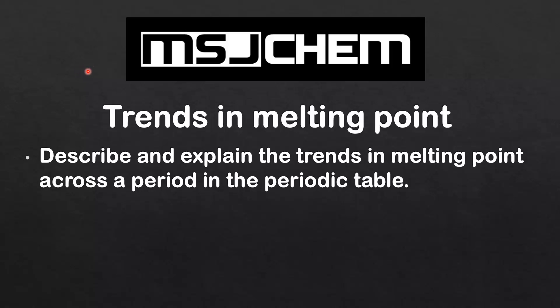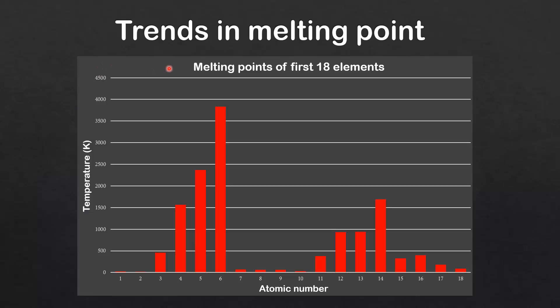This is MSJChem and in this video I'm going to look at trends in melting point — describing and explaining the trends in melting point across a period in the periodic table. Here we have a graph of the melting points of the first 18 elements. On the y-axis we have temperature in Kelvin, and on the x-axis we have increasing atomic number.